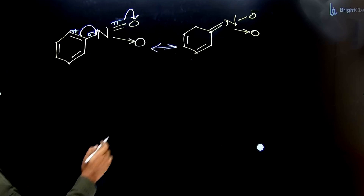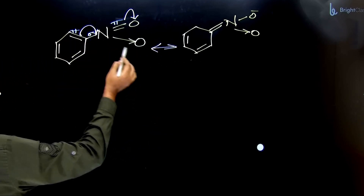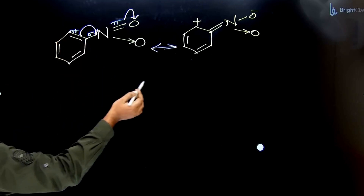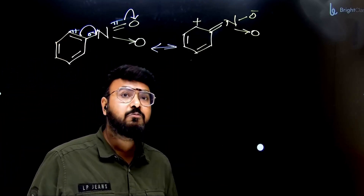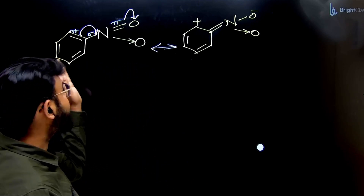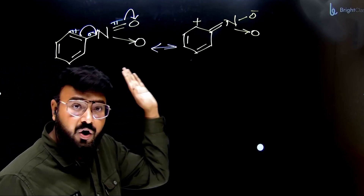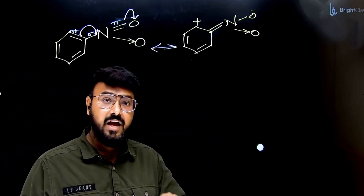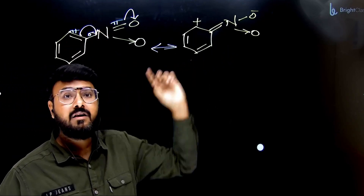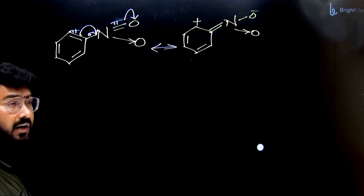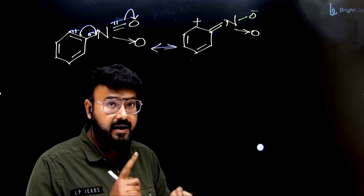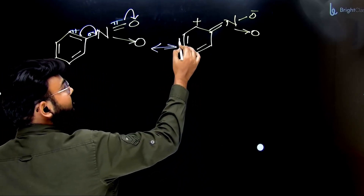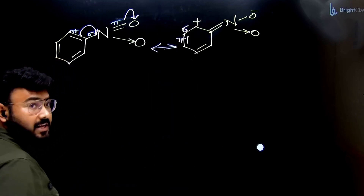When this pi electron shifted, this carbon is at a loss, so we put a positive charge — because when you move the pi electron, this carbon is in loss. A very important point: if the first resonating structure is neutral, all remaining resonating structures should also be neutral. That is a rule. You can see the first one is neutral, so the second resonating structure is also neutral. Now do we see any other pattern? Yes — we can see pi-sigma-positive. Positive means loss.